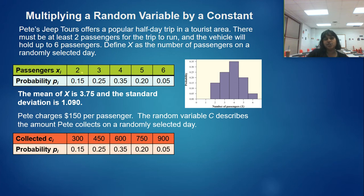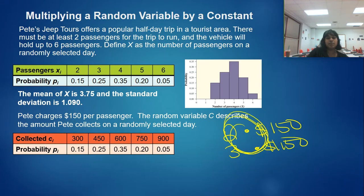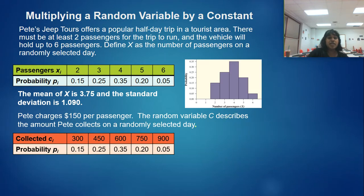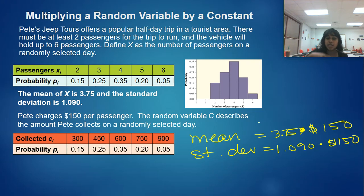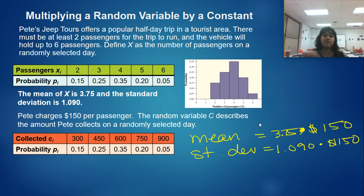If I define a new random variable C as the amount of money Pete collects on any randomly selected day, we can create a new table of values. To get the C value, I multiplied: two passengers times $150 gives $300, three passengers times $150, and so on. This is a multiplication transformation, so we know the mean will change and so will the standard deviation. Multiplying 3.75 by 150 and 1.090 by 150 gives us the transformed values.